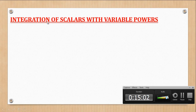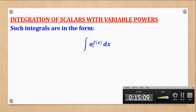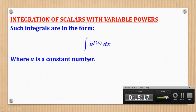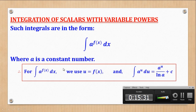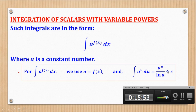Now we go to integration of scalars with variable powers. Such integrals are in the form: integral of a^(f(x)) dx, where a is any constant number such as 2, 3, 4, or 5, but with a variable power f(x). We use the method of change of variable, letting u = f(x), and remember that the integral of a^u with respect to u equals a^u divided by ln(a) plus c.